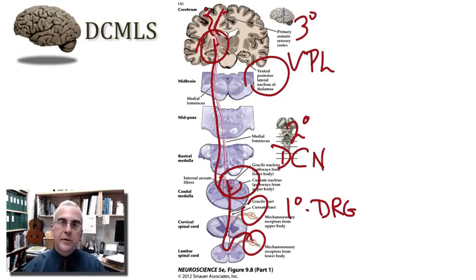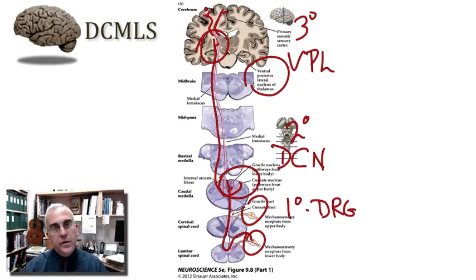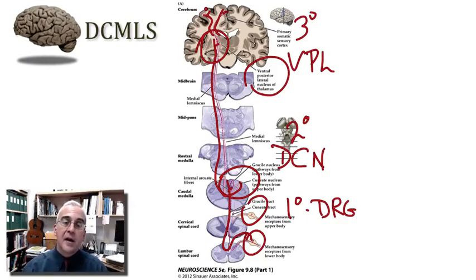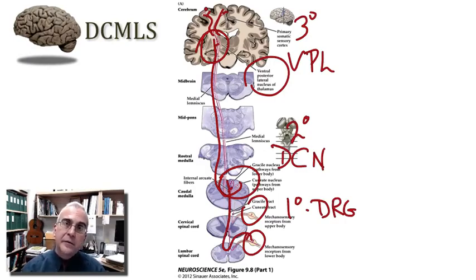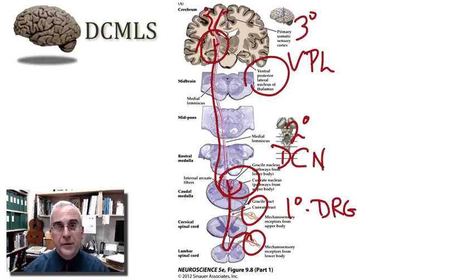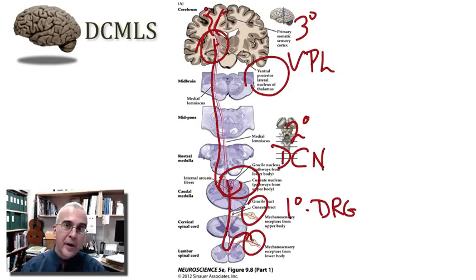Once we reach the postcentral gyrus, we basically abandon trying to order the neurons, because when the thalamus projects to the cortex, we're providing input to a vast network involving hundreds of millions of neurons that could potentially be modulated by this sensory stream. Given that scale, it doesn't serve us well to continue the numbering scheme that has served us along the pathway from skin up through the thalamus.